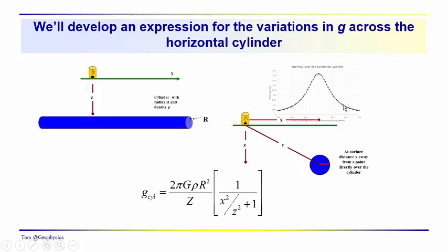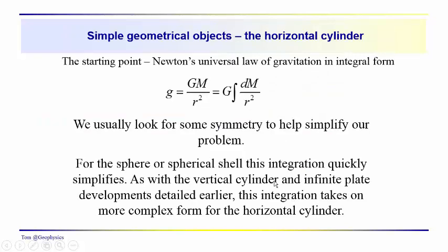The shape of the anomaly is described by this term, and the question was: come up with the value of X over Z at which the anomaly drops to one half of its maximum value. We'll come back to that later. So how do we go about deriving this expression?